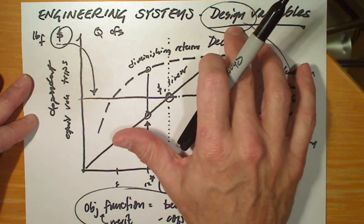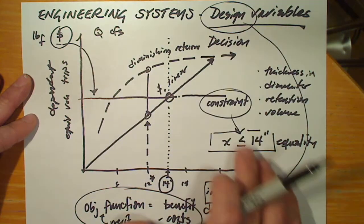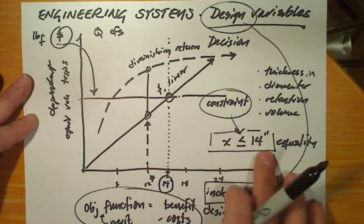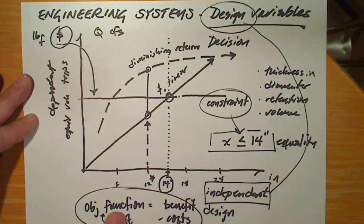It's important to understand the difference between the design variables over which you have discretion, the constraints that govern the design, and the objective function, the merit, or the worth, or how we compare the value of one design to another, and decide which design is best.